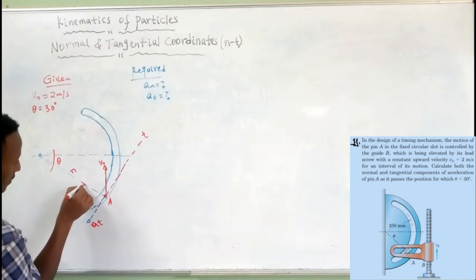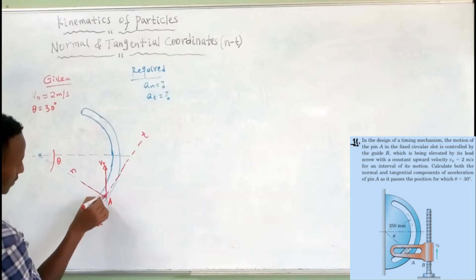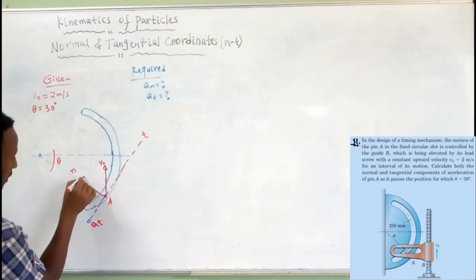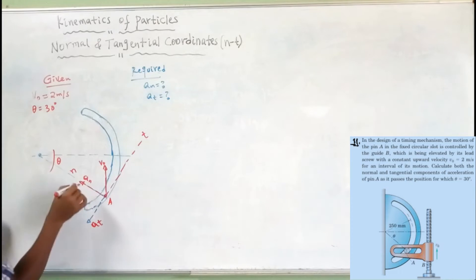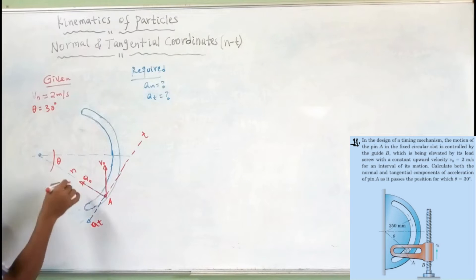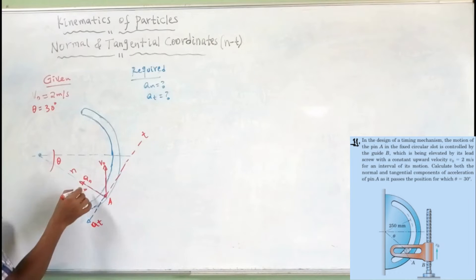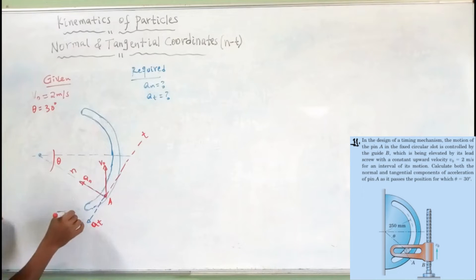We have a normal axis. Along the normal axis, we have normal acceleration.